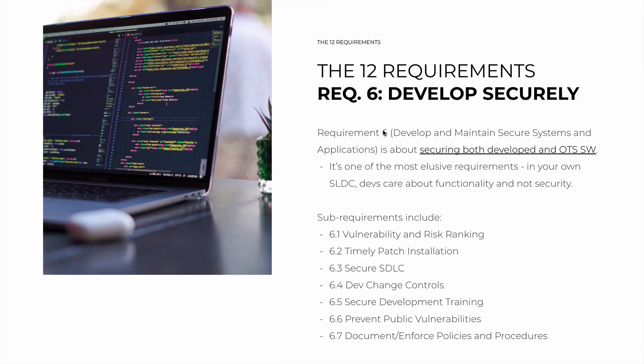Let's talk about requirement number 6, develop securely. This simplified name represents the need to have your developers trained to implement security features in what they develop, as well as touching on the timely installation of patches, both for your applications and also the ones that you obtain off the shelf. Requirement number 6, with the full name develop and maintain secure systems and applications, is about securing both your own developed applications and software that's off the shelf. With the focus being mostly on your own software, it's important to note that this is one of the most elusive requirements.